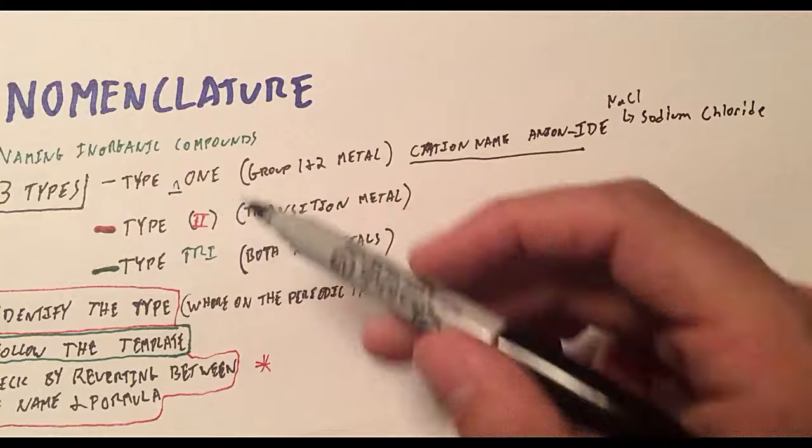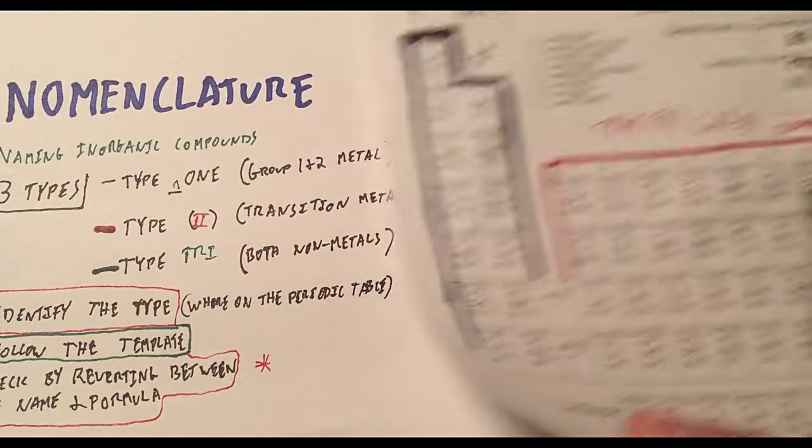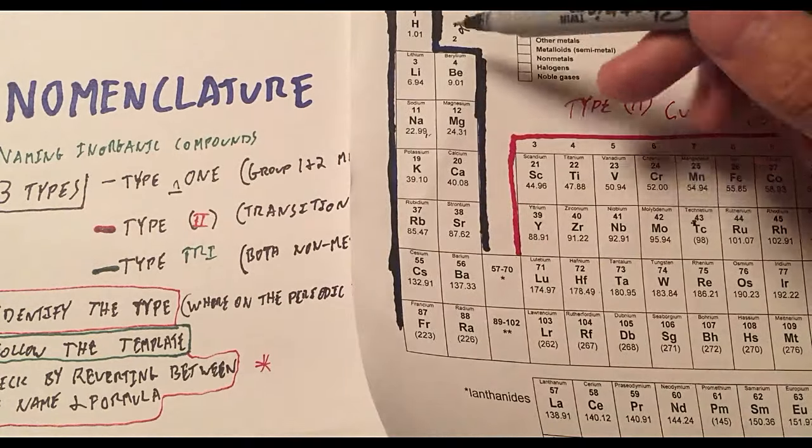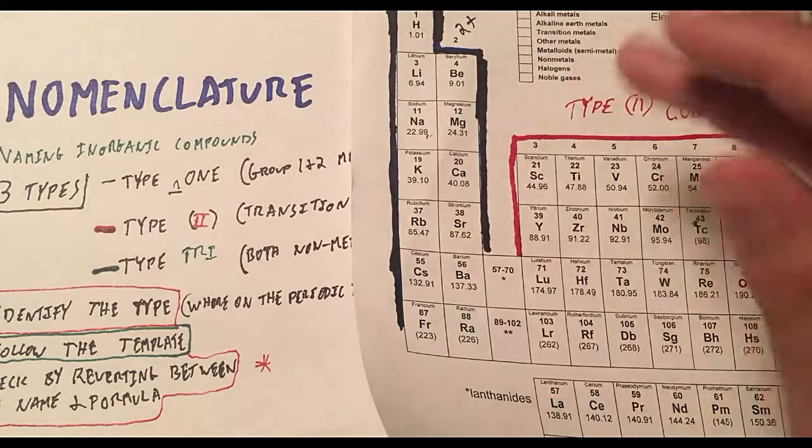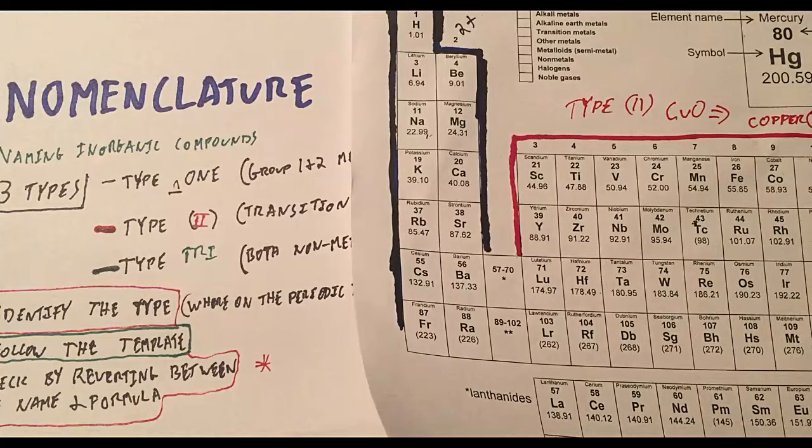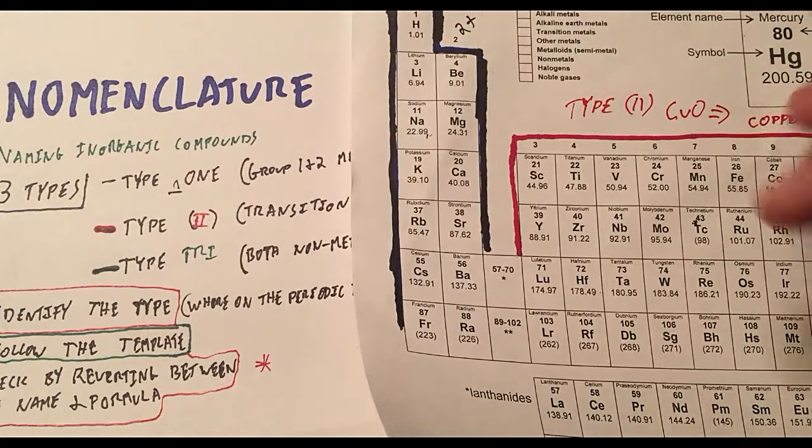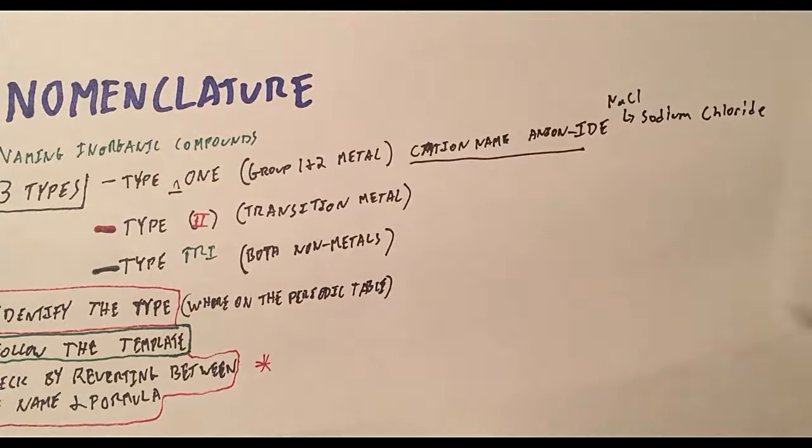That's why I call it Type None, because there's nothing you have to do. And the idea there is that anything that's in Group 1 or 2, you know the charge. It's +1, +2. So therefore, you don't have to indicate to whoever's reading the name that there's anything else going on. It's just 1, 2.